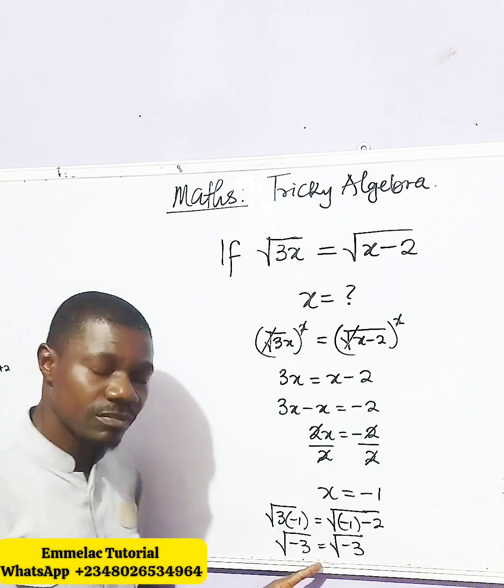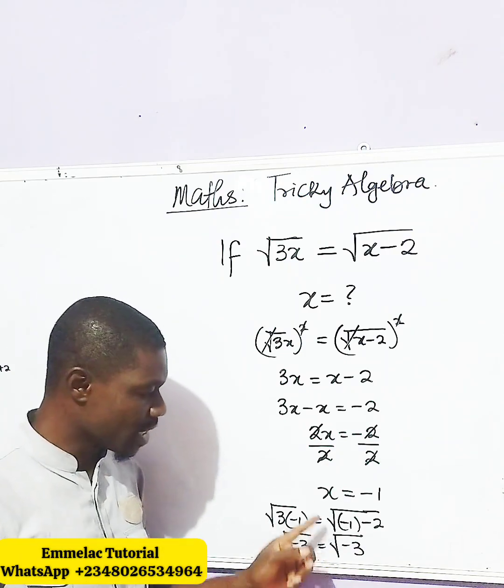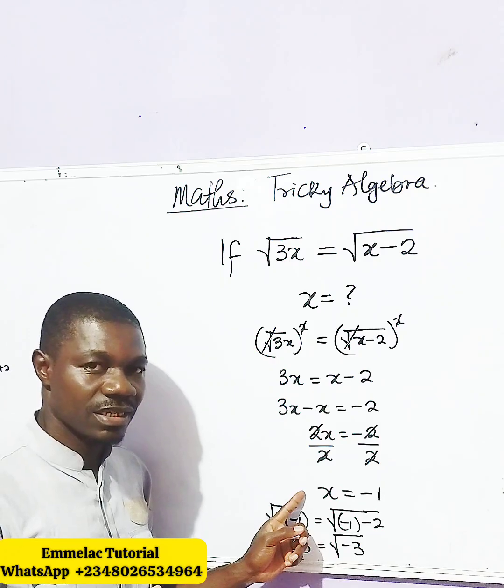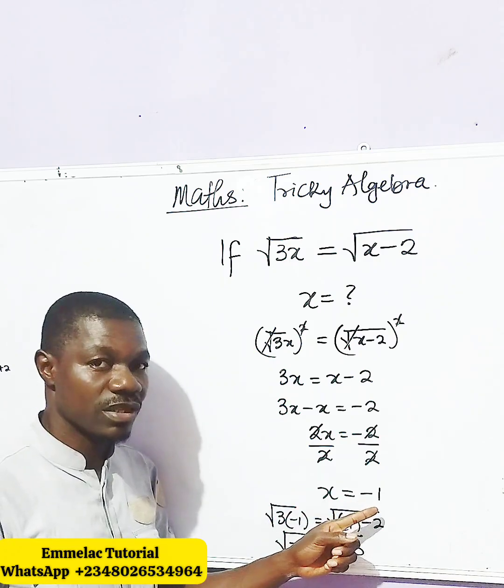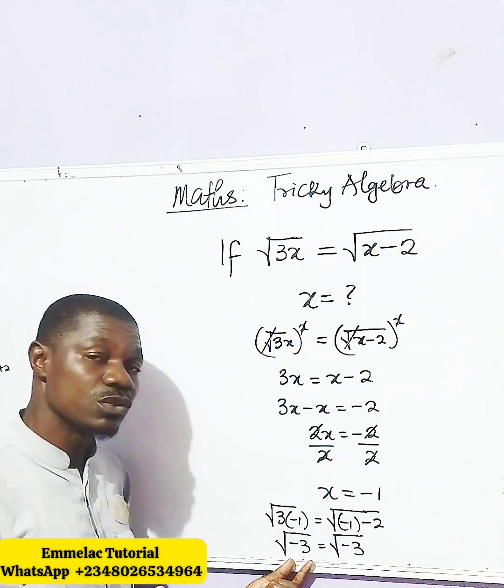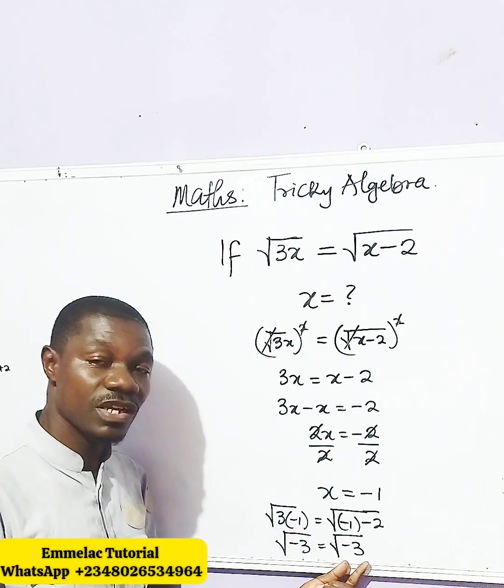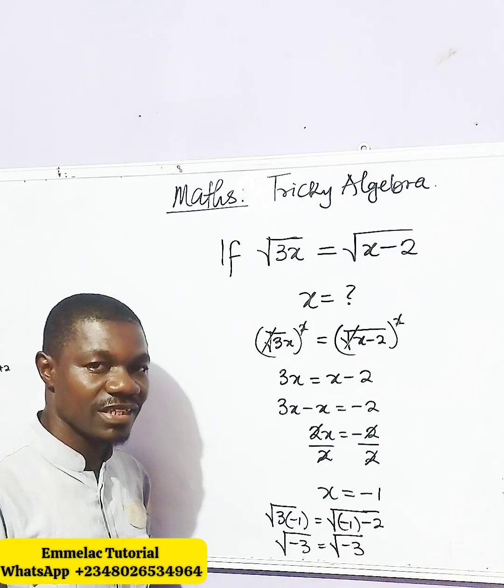Now looking at this, do you think x is negative 1, for us to have root of negative 3 at left-hand side and root of negative 3 at the right-hand side?